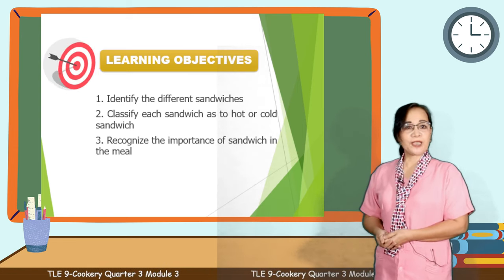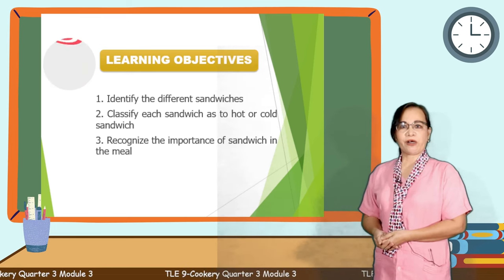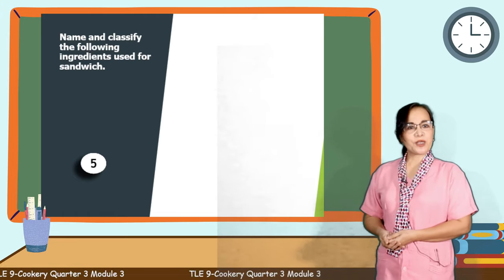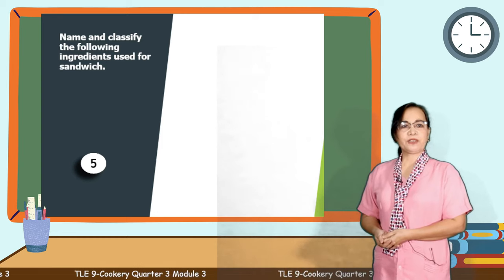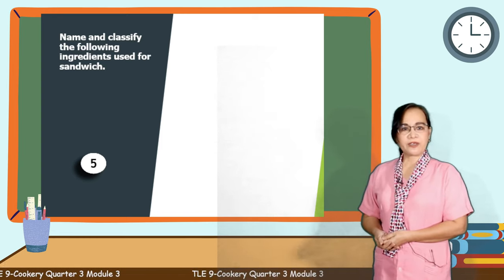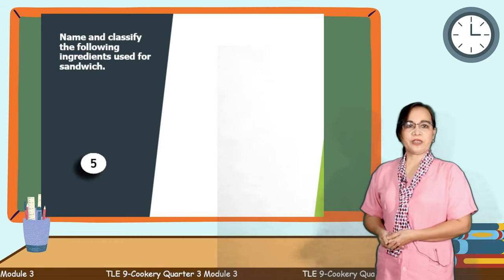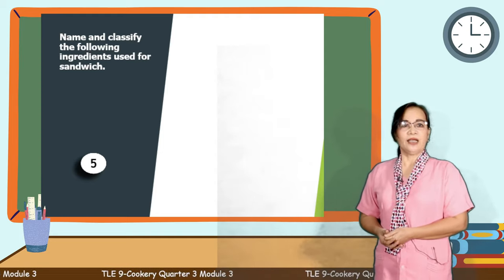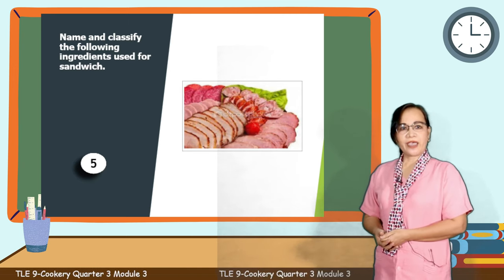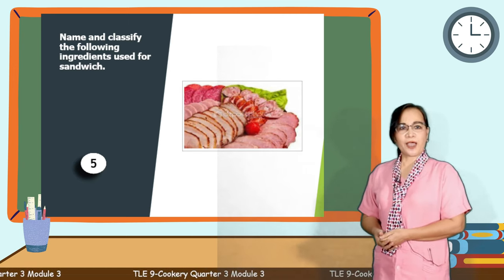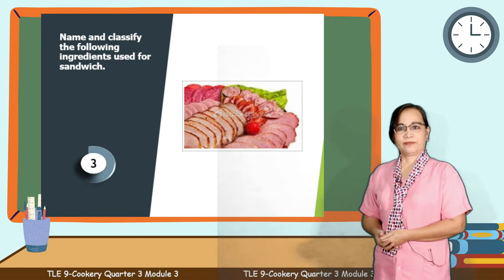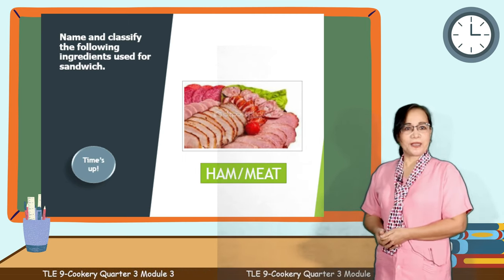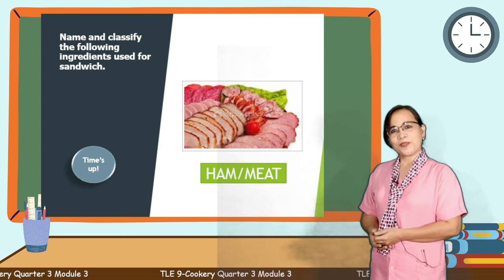Before we proceed to our lesson, let's have a simple recall on our previous lesson. Let's have a picture analysis. Focus your attention on the displayed pictures and figure out the particular ingredients and their classification. Write your answer in the comment section below. I'm giving you 5 seconds to answer. Let's have the first picture. Your time starts now. Time's up. The answer is ham, classified as meat. Excellent! You got it right!